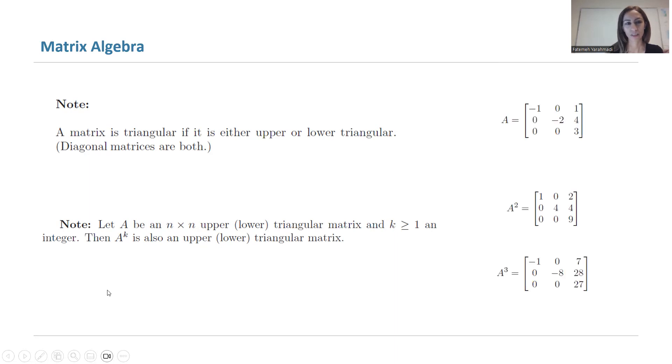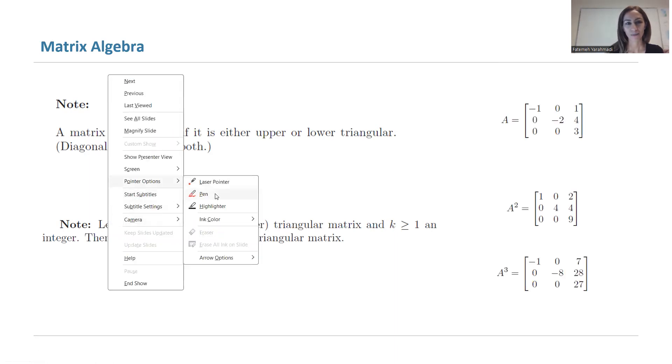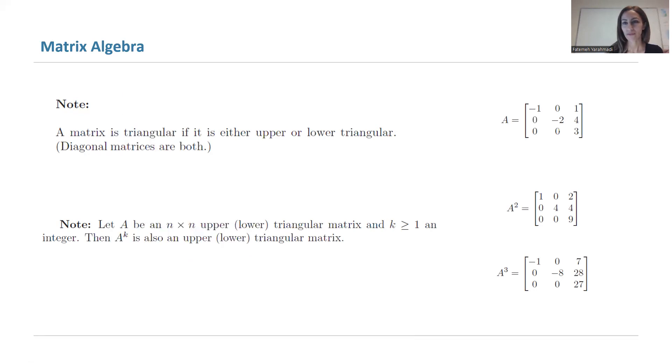For example, take a look at this example here. You have this matrix here. Everything below the main diagonal are zero entries.